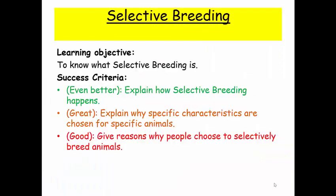So what we're looking at this lesson is selective breeding, and we're going to find out what selective breeding is, how it happens, why we choose specific animals, and why we give specific animals specific characteristics.